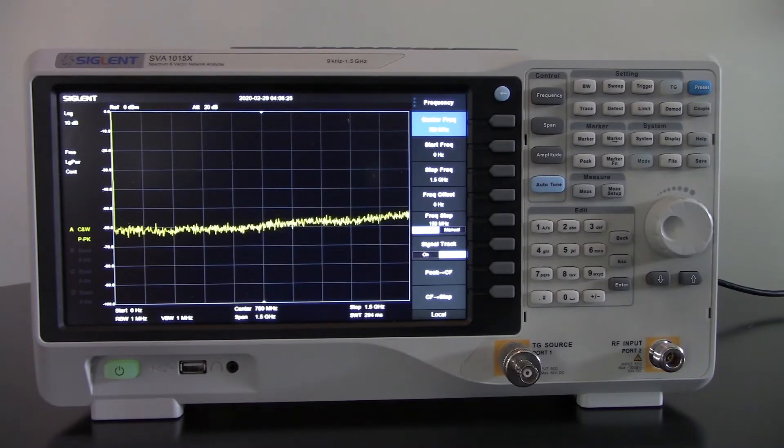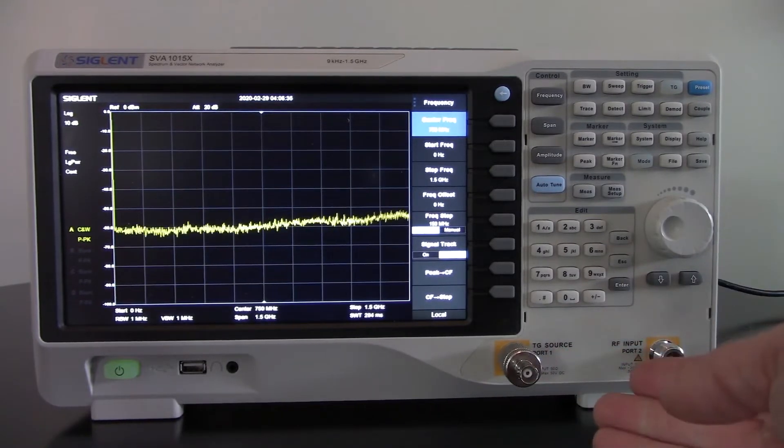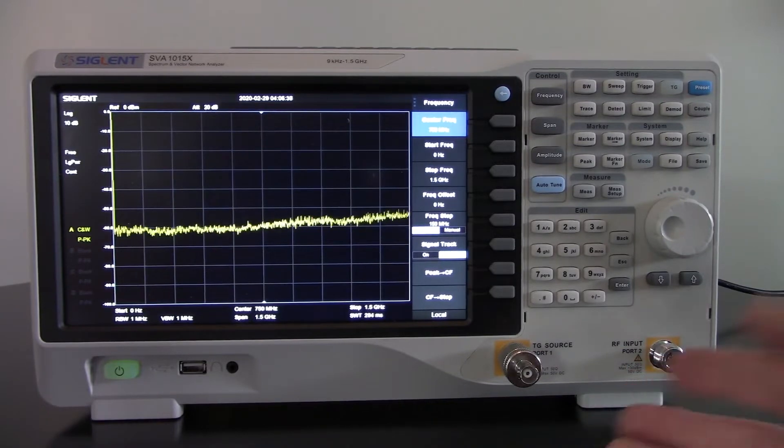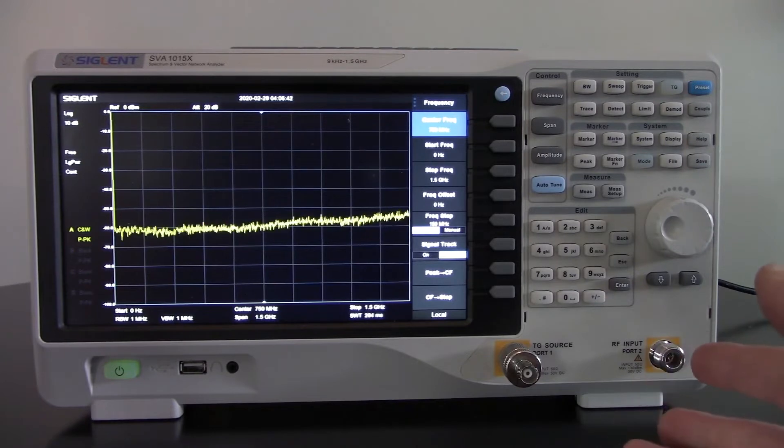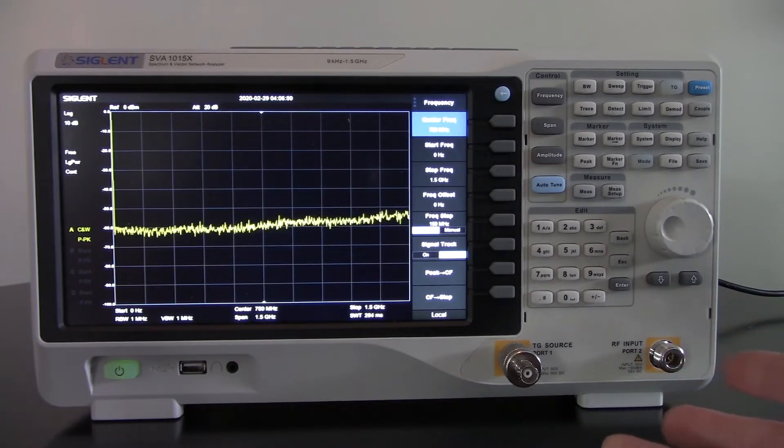The distance to fault feature uses frequency domain reflectometry, also known as FDR. FDR sends a series of frequencies out of the tracking generator port. Then it's measuring the reflections back into that tracking generator port and collecting data, performing some calculations on that reflected information or reflected signal, and then determining where those impedance differences are based on those swept frequencies.